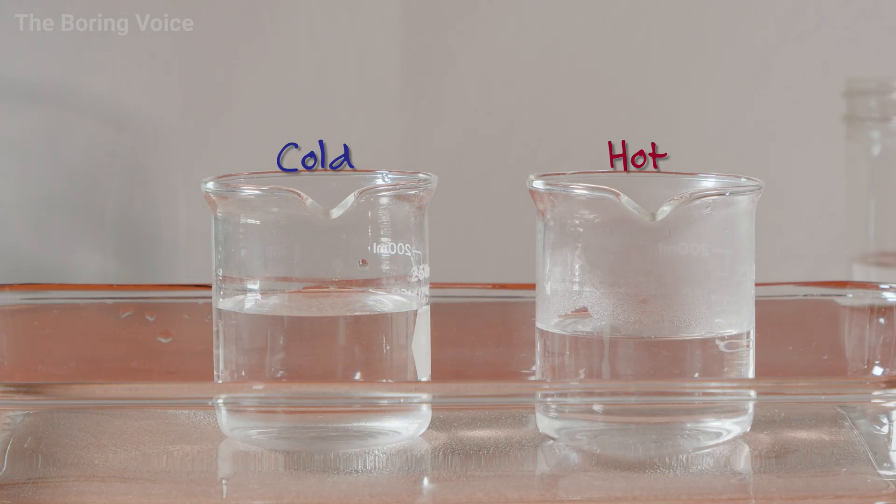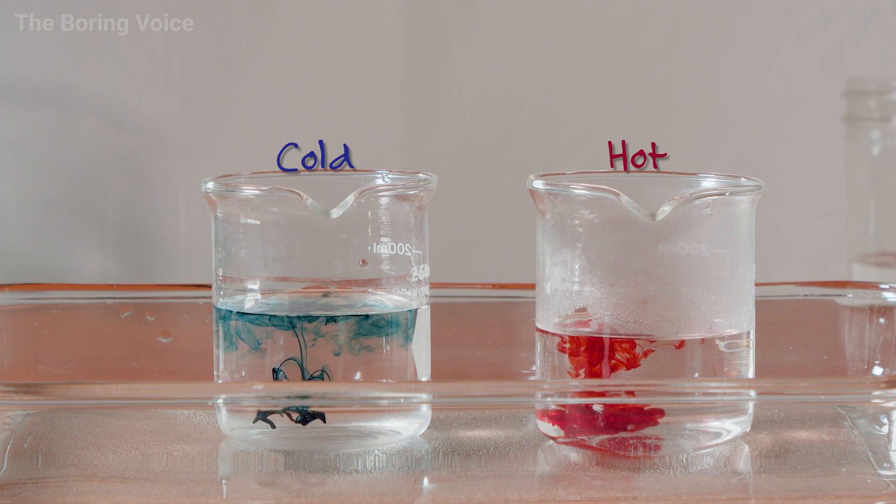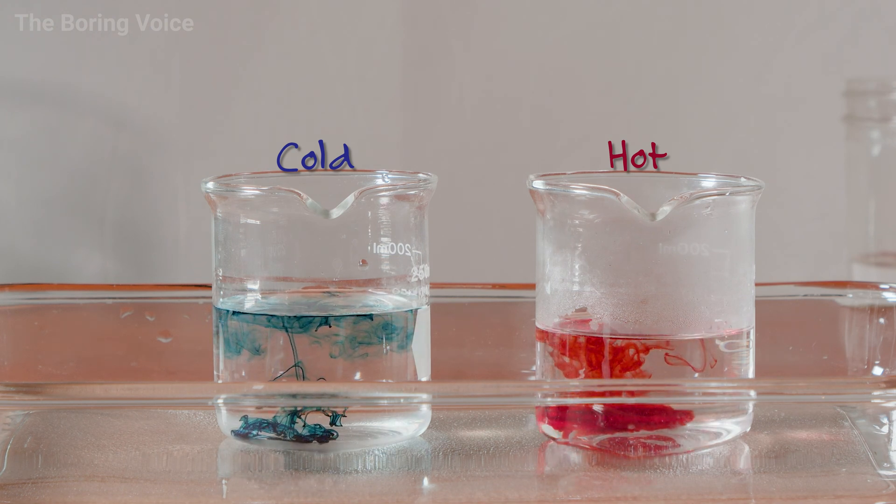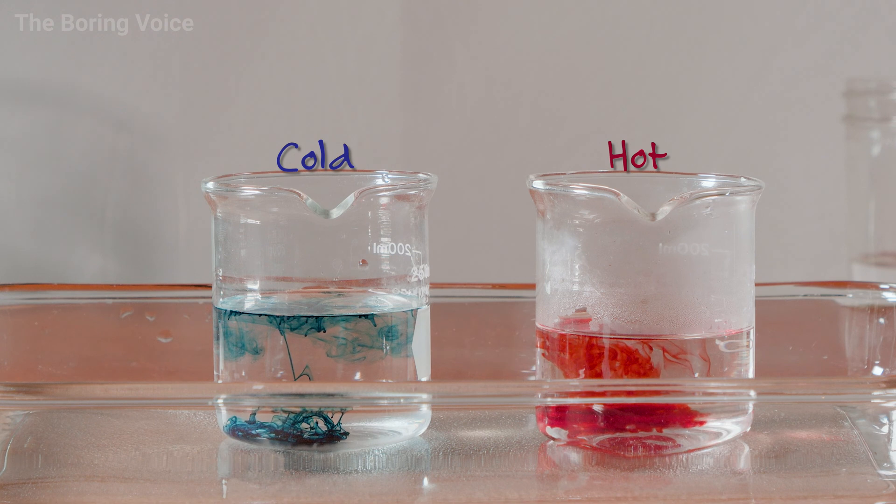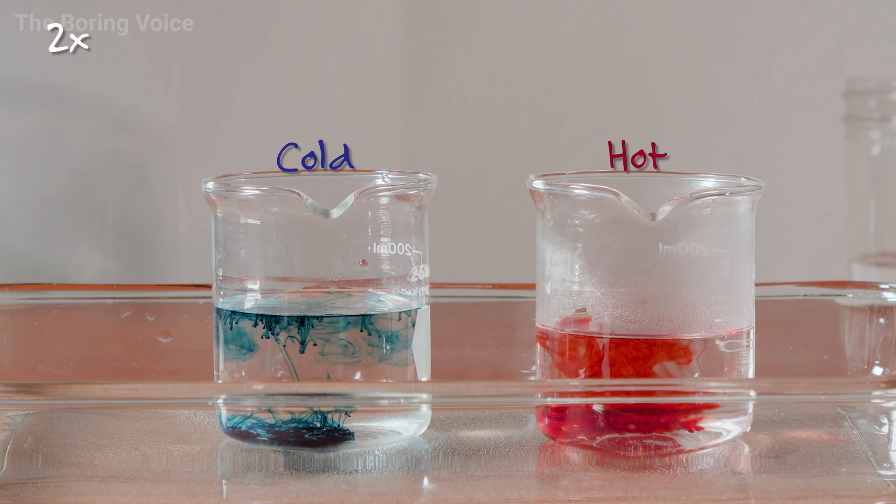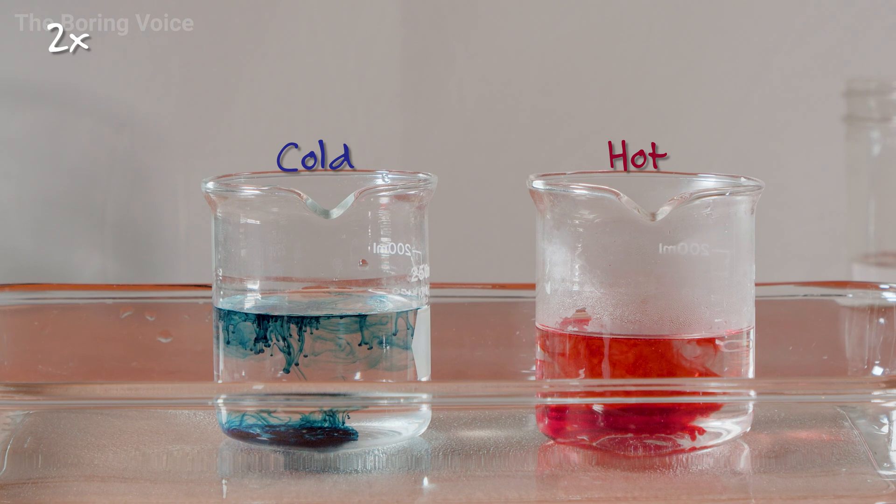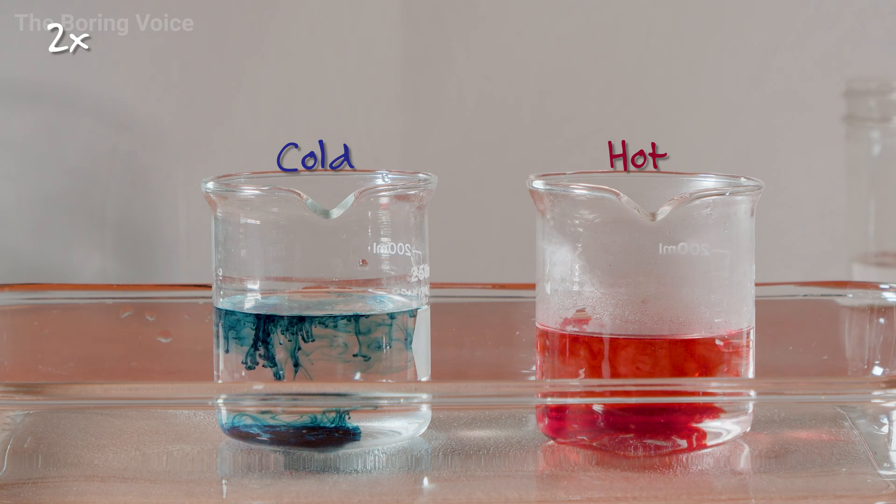There is another observable difference between the hot and cold water. When the dye is added to the different jars, the dye in the coldest jar mixes slowly, while the dye in the hot water rapidly mixes into a homogenous mixture. This simple observation is a good way of seeing the motion of the molecules in the substance.